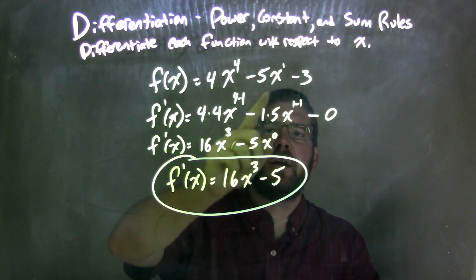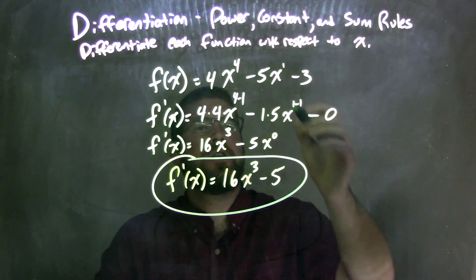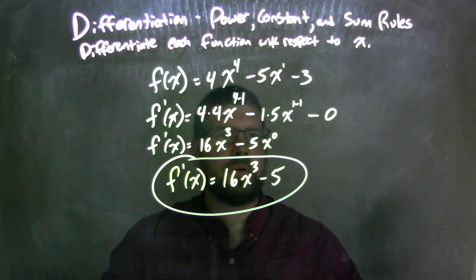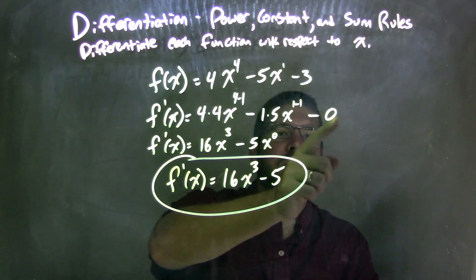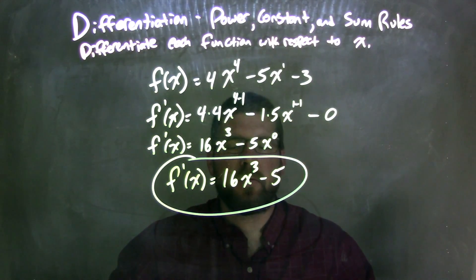Then from there, we did the same power rule in a sense for just x, the 1 comes down up front, and we subtract 1 from the exponent, and then the derivative of a constant, the last part here, is just 0.